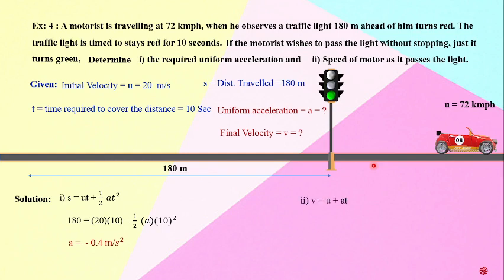Next, v equals u plus a t. We need to find out the final velocity. So we know initial velocity, we got acceleration that is retardation minus 0.4, and we also know the time taken. So with this set, substitute the values and find out the final velocity. v is equal to 16 meters per second.